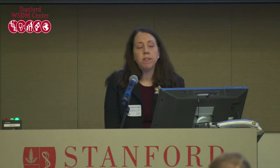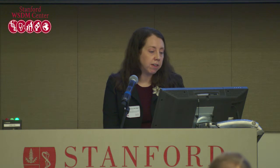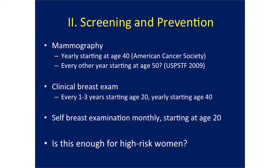Once we find these genetic risk factors and know more about who is at higher risk, we get into questions about screening and prevention for breast cancer. Mammogram — an X-ray view of the breast — would be the standard way to screen, starting yearly at age 40 in general, as well as a clinical breast exam every one to three years starting at age 20 and monthly self-breast exam. That's for average-risk women.